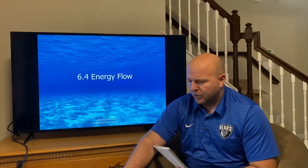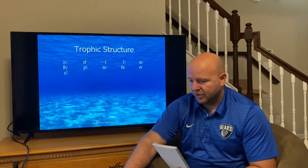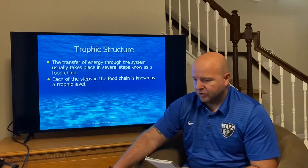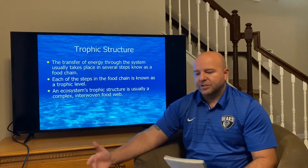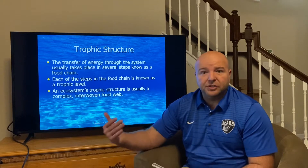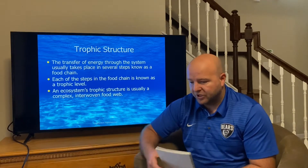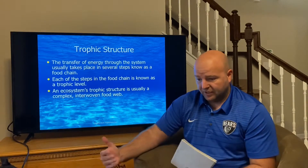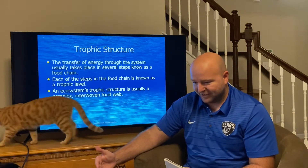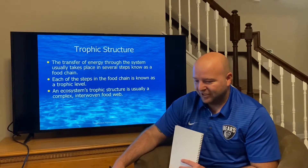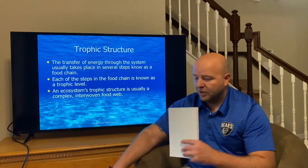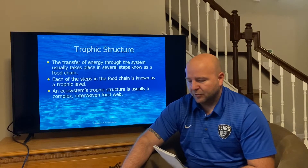We do have quite a few boxes on our study guide page today, but none of them are super long chunks of writing. We're starting here with trophic structure. The transfer of energy throughout an ecosystem takes place in several steps, which is often referred to as a food chain, although we're going to learn a couple of better terms. Each of these steps is referred to as a trophic level, and the ecosystem's trophic structure is usually a complex interwoven web — so food web is a term we'll prefer over food chain.